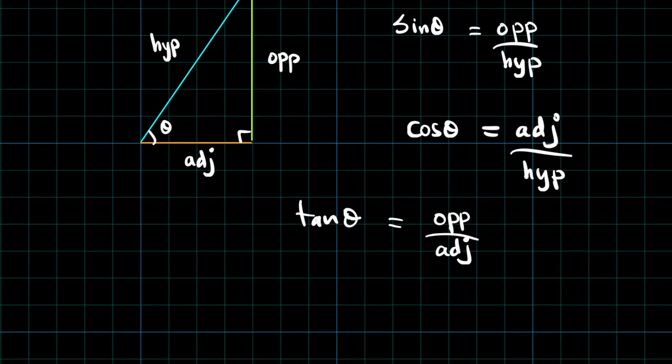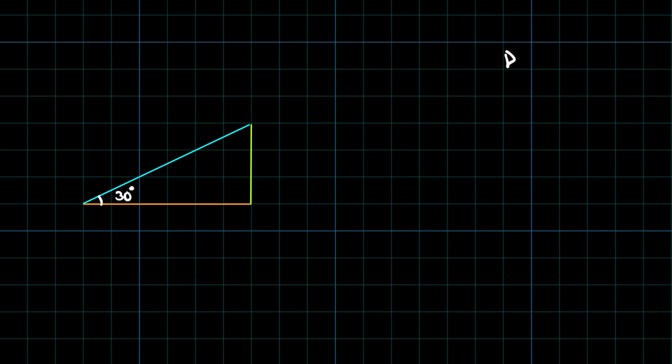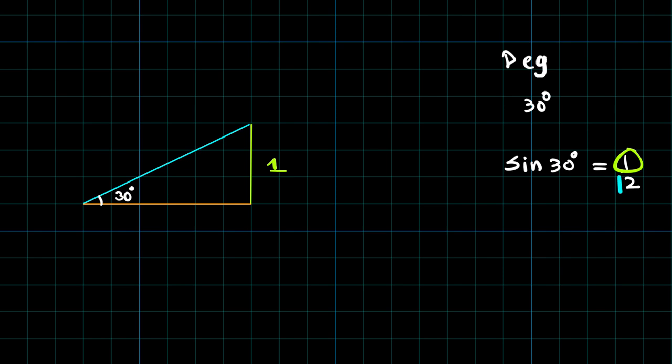Now let me draw a triangle in which this is the base, then this is the height and this one is the hypotenuse. This time I am labeling this angle as 30 degrees. I will go to the calculator, plug in 30 degrees, and evaluate sine of 30 degrees, which is half. That means the opposite side is 1 and the hypotenuse, which is in blue color, is 2.